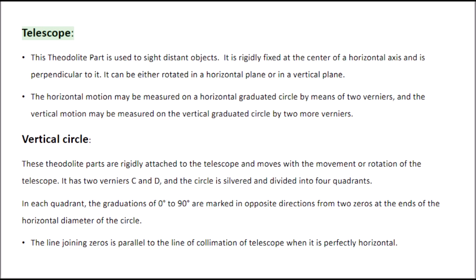Telescope. This theodolite part is used to sight distant objects. It is rigidly fixed at the center of a horizontal axis and is perpendicular to it. It can be either rotated in a horizontal plane or in a vertical plane. The horizontal motion may be measured on a horizontal graduated circle by means of two verniers, and the vertical motion may be measured on the vertical graduated circle by two more verniers.